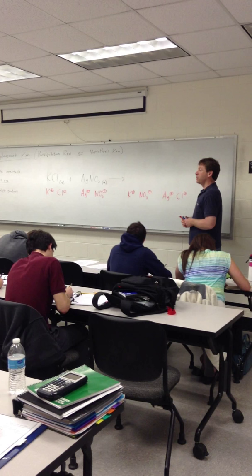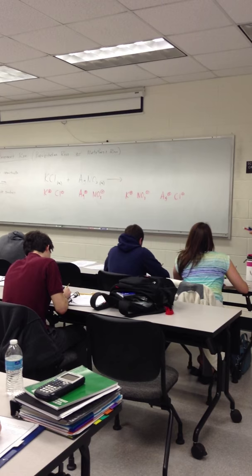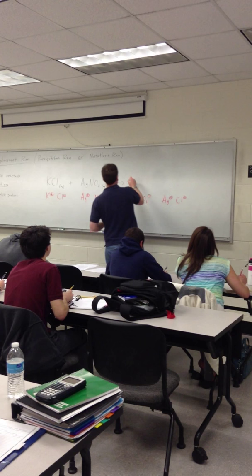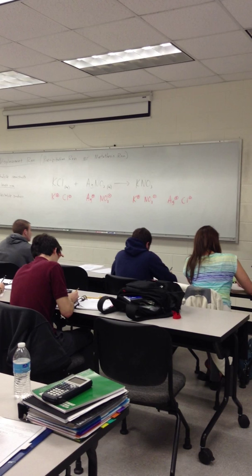So how do you predict the products of a reaction like this? Well, it's just like a swinging 70s sex party. Everybody's going to swap partners. So now our K-plus is going to be paired with a nitrate, and our Ag-plus is going to be paired with a chloride. This is a heterosexual swinging 70s sex party, so it has to be cations and anions pairing together.